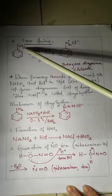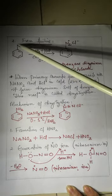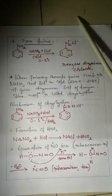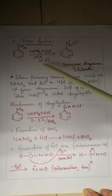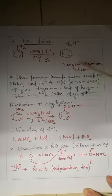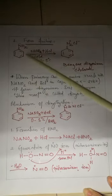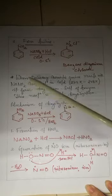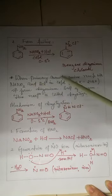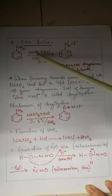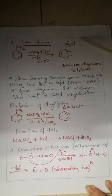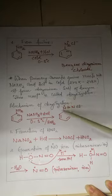The next reaction is from aniline. In aniline, the NH2 group is attached to benzene with a lone pair on nitrogen. Aniline reacts with sodium nitrite and HCl at a low temperature of 0 to 5 degrees Celsius to form benzene diazonium chloride. This is called the diazotization reaction, which converts a primary aromatic amine into a diazonium salt.